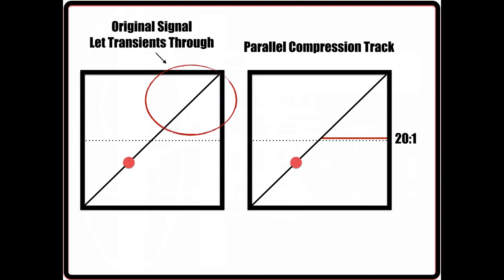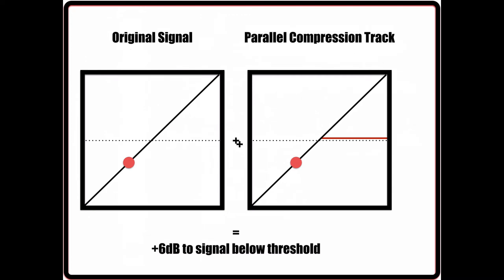However, what happens then is when the signal is below the threshold on the compression track, it will combine with the original track. And when two of the same signals are combined, there is a plus 6 dB boost in level, so that the combined signal below the threshold will now be 6 dB louder. And the signal on the compression track will not pass the dynamic threshold due to the limiter, as to not affect the overall signal level above the set threshold.